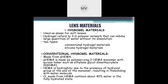According to lens materials, hydrogel — used as the base of soft lenses — refers to a 3D polymer network that can imbibe large quantities of water without dissolution. There are two types: conventional hydrogel material and silicone hydrogel material. Hydrogel material has the capability to hold large amounts of water without destroying the material.